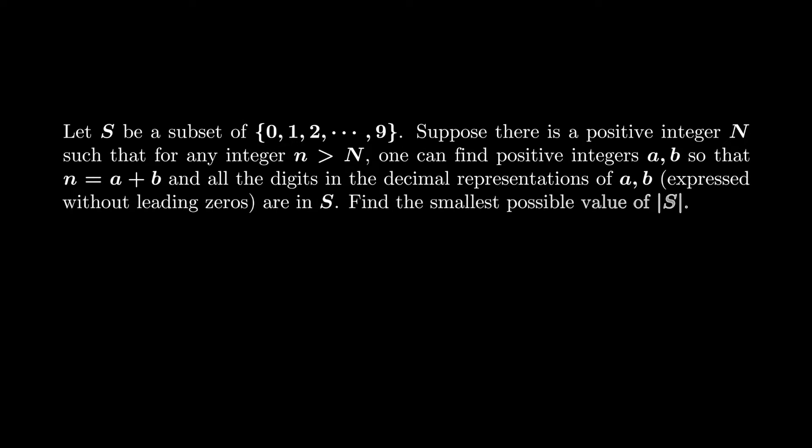The problem is the following. S is a subset of integers between 0 and 9. We assume that for any large enough integer n, one can express it as the sum of two integers a and b whose digits are all in the set S. So the question is to find the minimum cardinality of S that enjoys this property.